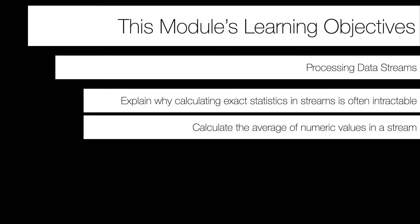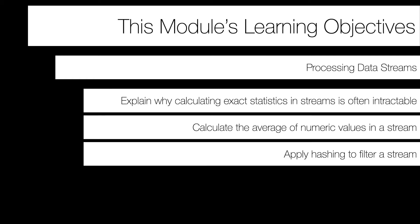The second is to be able to calculate the average numeric value from a stream of numbers — what do we need to change in our equations for means when dealing with streams. Then we'll talk about using hashing to apply filtering to streams when the number of keys we care about could be much larger than what we can fit in memory, let alone the potentially unbounded size of the stream.